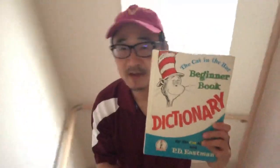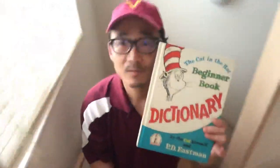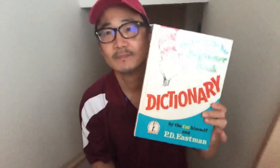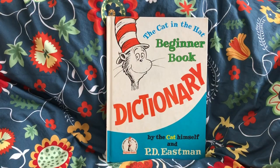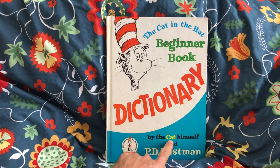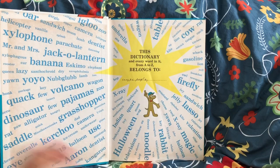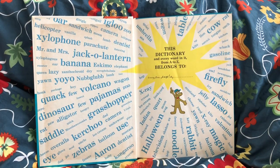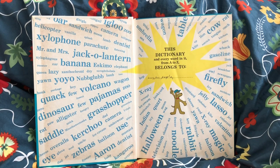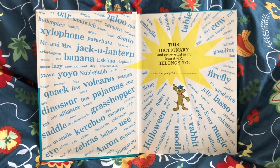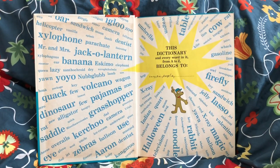The Cat in the Hat Beginner Book Dictionary by the cat himself and P.D. Eastman. This actually belonged to my kids when they were much younger, but I myself had a copy when I was a boy. And I would read this again and again with my brothers, pointing out the pictures, talking about them, and learning a lot about how words work. So I hope you enjoy this too and learn something new.